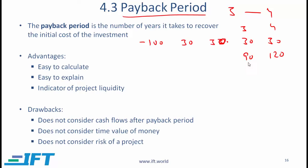What you need to do is the following. You need to recover 100. To go from 90 to 100, that is another 10. What you assume is that between 90 and 120 the 30 is coming in continuously. So if the money is coming in continuously, how long will it take to get 10? The answer is 10 over 30. So the total time to recover is 3 years and 10 over 30, or 3 and one third of a year, or 3 years and 4 months.